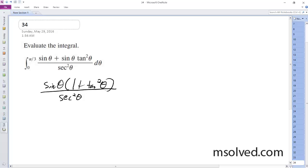And then one plus tangent squared theta is the same thing as secant squared theta, and then these cancel out, so you're just left with sine of theta.